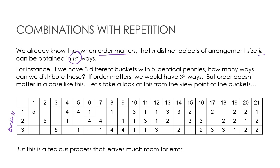So essentially there are 21 ways. One way is to put all five in bucket one and not put anything in buckets two or three, or put all five in bucket two, or put all five in bucket three. Then you can systematically go through: four in bucket one and put the other in bucket two, or four in bucket one and put the other in bucket three, and so on — continuing through all the different options using four in one, then two and three, then two and two and one, etc.